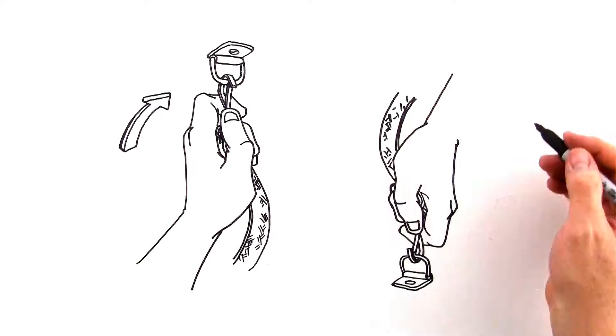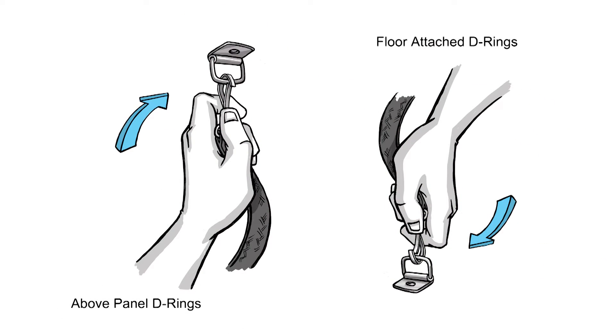He simply clips the tension belt to the provided D-rings that he installs just above the panel and into the floor.